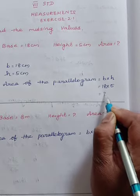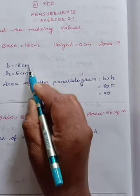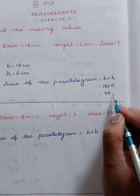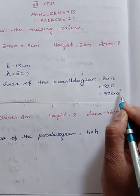So 18 times 5 is 90. Since it is given in cm, cm into cm gives cm square.